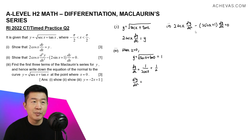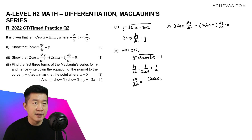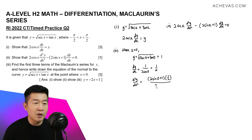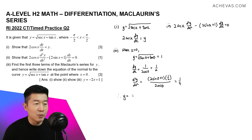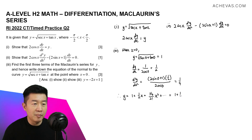Let's find d²y/dx² when x equals 0. Making use of Part 2 and making d²y/dx² the subject: it equals (2 sine x + 1) · dy/dx divided by 2 cosine x. At x = 0, this is (0 + 1) · (1/2) divided by 2 · 1, giving 1/4. Therefore the Maclaurin expansion for y = √(sec x + tan x) is 1 plus (1/2)x plus (1/4) divided by 2! times x², giving the first three terms as 1 + (1/2)x + (1/8)x².